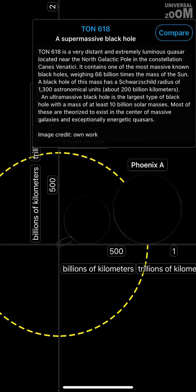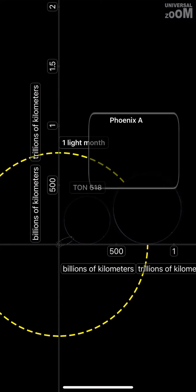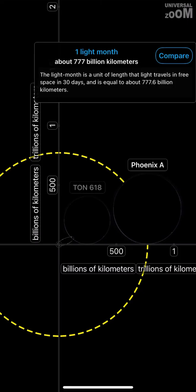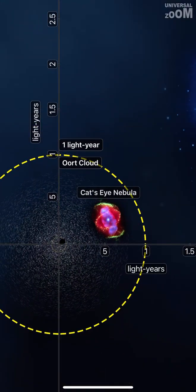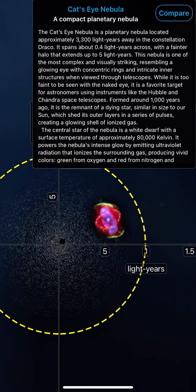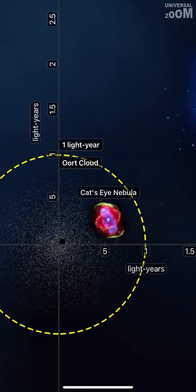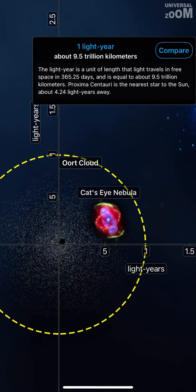TON 618, Phoenix A. One light month, about 777 billion km. Cat's Eye Nebula, a compact planetary nebula. Oort cloud, one light year.